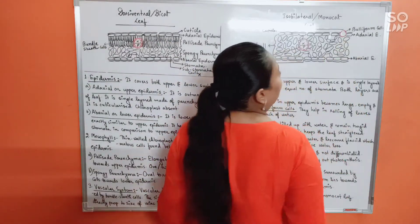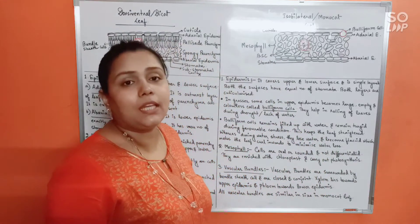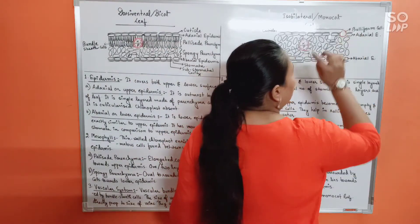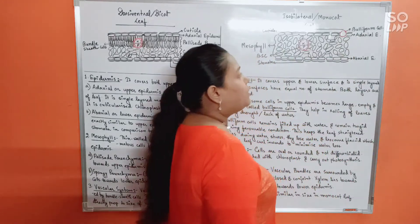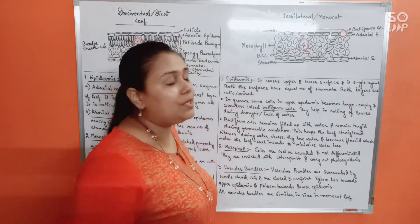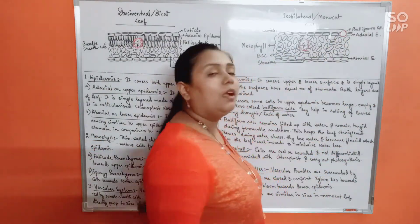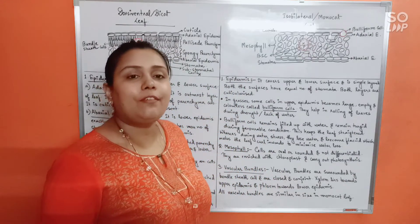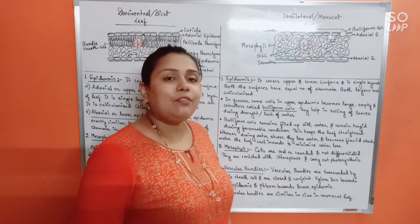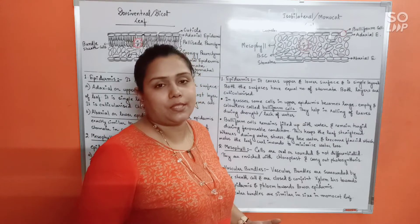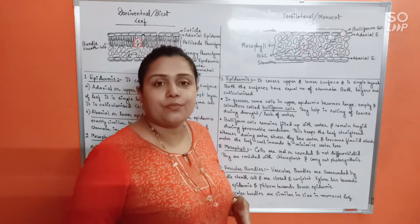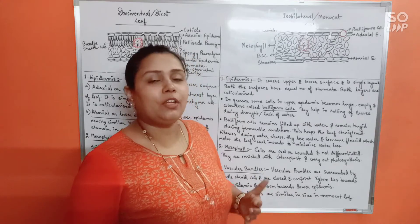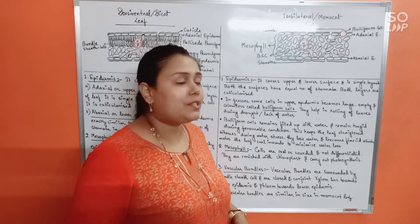Something different that you have not seen in the dicot leaf is an enlarged cell present in the upper epidermis called the buliform cell. Buliform cells are specialized epidermal cells mostly found in grasses, and they act as water stress indicators for monocot plants.